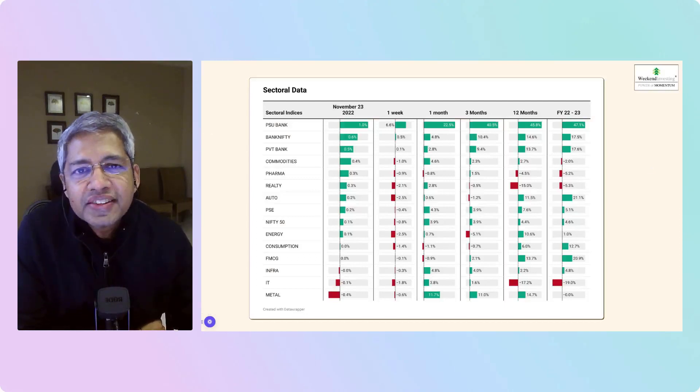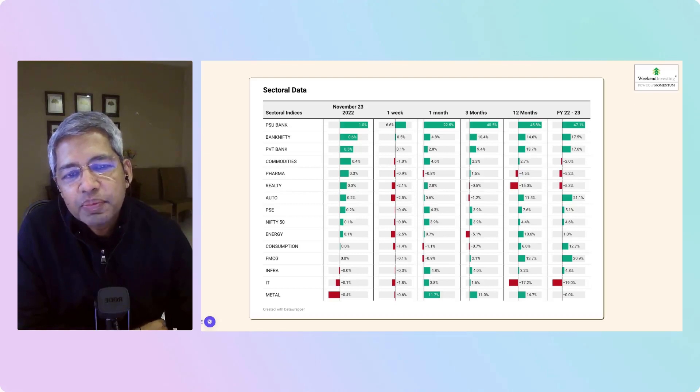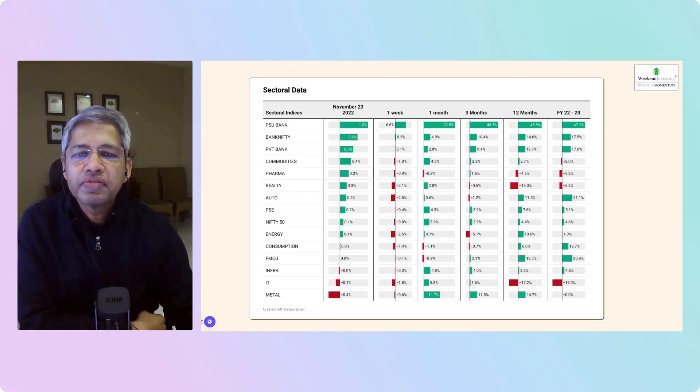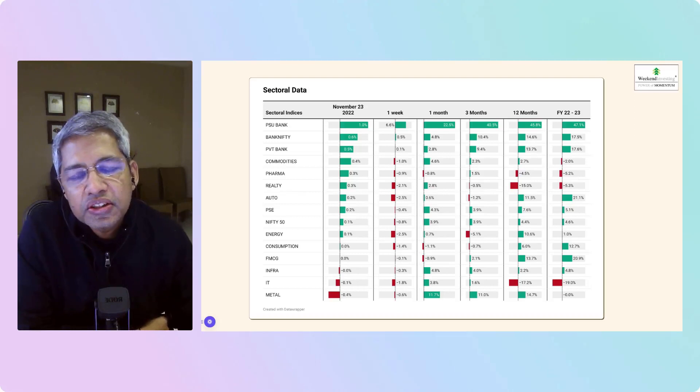PSU banks once again taking the lead, up 1%, up 22.5% in a month, 40.5% in three months. The market was choppy today. It opened gap up, Nifty came down and closed the gap, started to go up again.